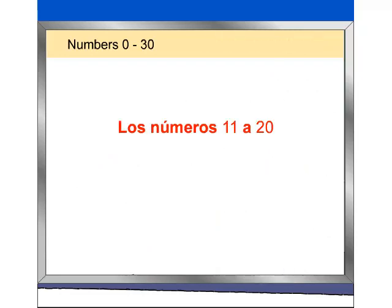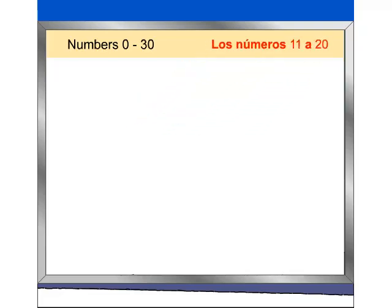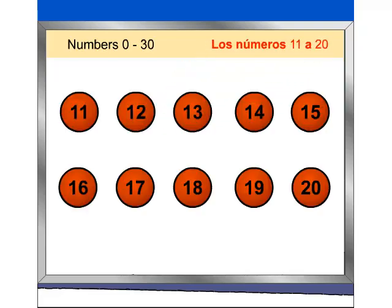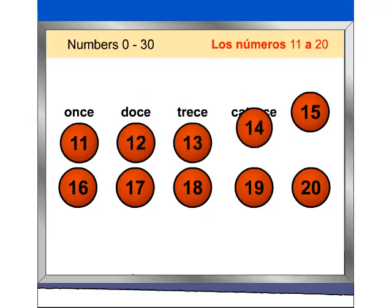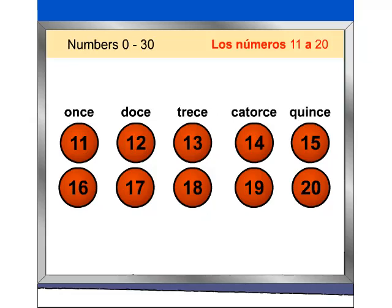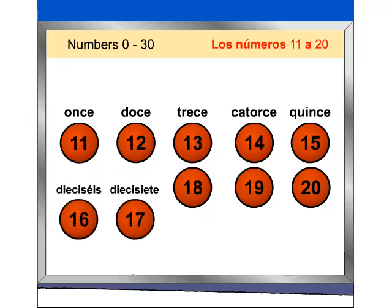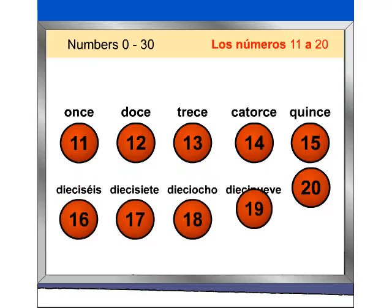Now let's do numbers 11 through 20 together. Repeat after me. Once, doce, trece, catorce, quince, dieciséis, diecisiete, dieciocho, diecinueve, veinte.